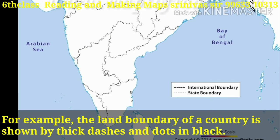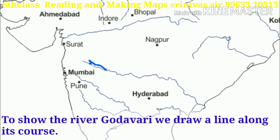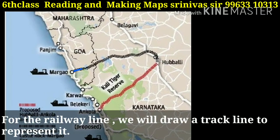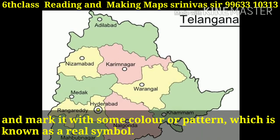For example, the land boundary of a country is shown by thick dashes and dots in black color. A city is marked by a small circle or point. To show the river Godavari, we draw a line along its course. For a railway line, we draw a track line to represent it. In a Telangana map, if we want to show the area of Hyderabad district, we demarcate its boundary and mark it with some color or pattern, which is known as an areal symbol.